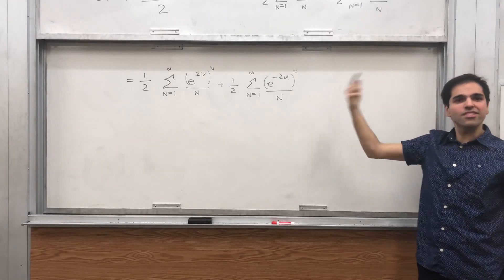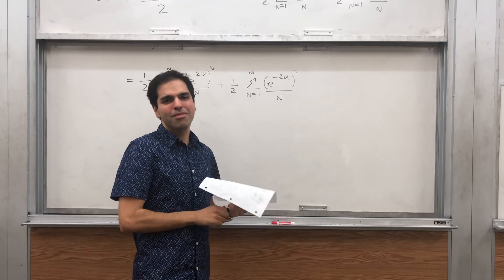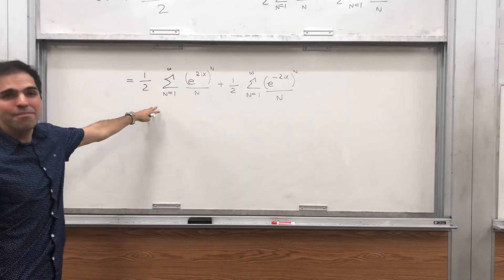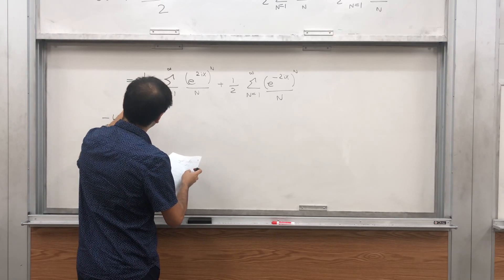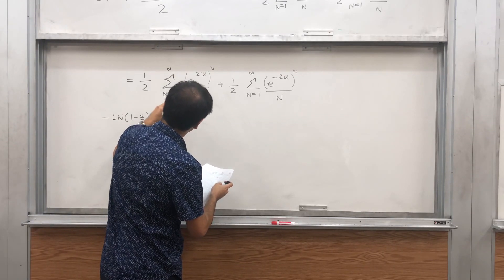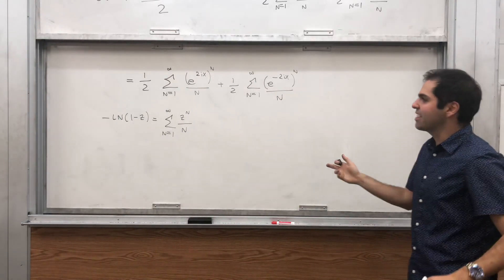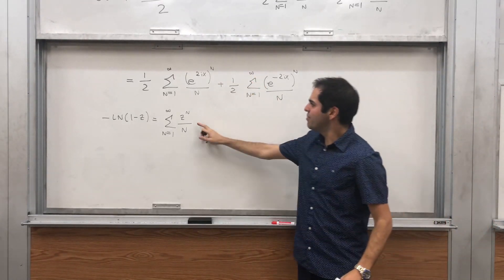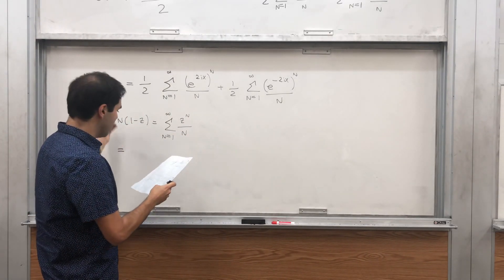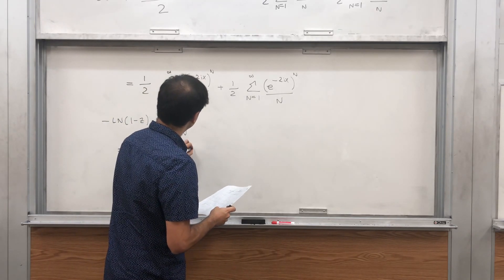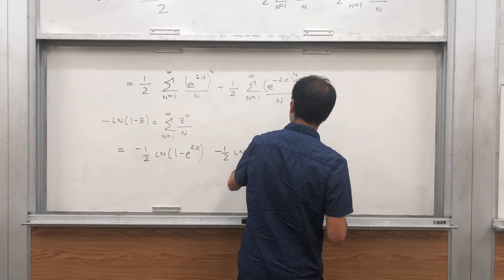Those things are precisely power series for the logarithm. Remember, there's this nice identity: -ln(1 - z) = sum from n = 1 to infinity of z^n / n. You may have seen this as ln(1 + x) = sum of (-1)^n x^n / n, but manipulating that gives us this form. Using that power series, we get this equals -½ ln(1 - e^(2ix)) minus ½ ln(1 - e^(-2ix)).